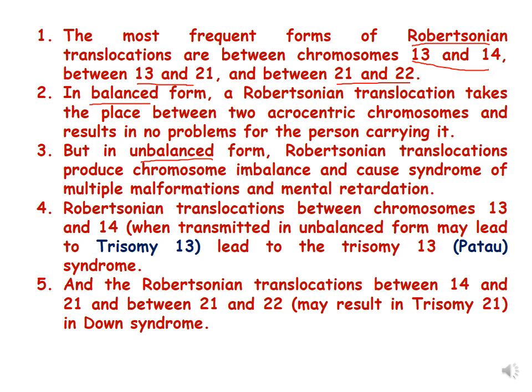Robertsonian translocations are of two kinds: balanced and unbalanced. In the balanced form, a Robertsonian translocation takes place between two acrocentric chromosomes and results in no problems for the person carrying it. The balanced form balances the number of genes, so there is no problem for the person who carries it. In the unbalanced form, Robertsonian translocation produces chromosome imbalance and causes syndromes of multiple malformations and mental retardation.